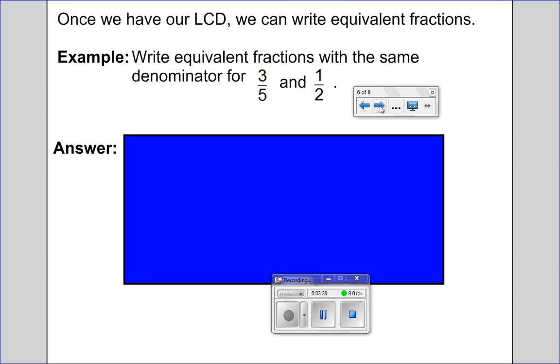All right, once we have our lowest common denominator, we can write equivalent fractions. So for example, let's write equivalent fractions with the same denominator for three fifths and one half. Put the video on pause. When you hit play, I'll reveal the answer. Try this out at home first. All right, let's see how you did.